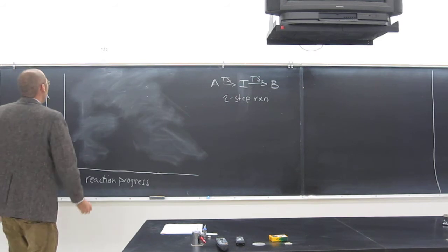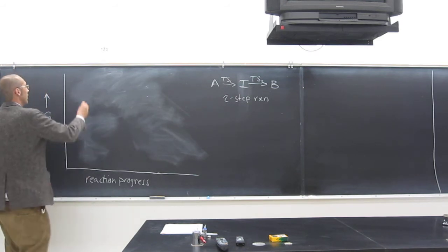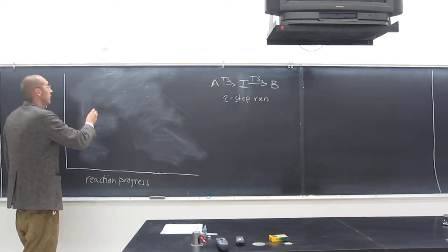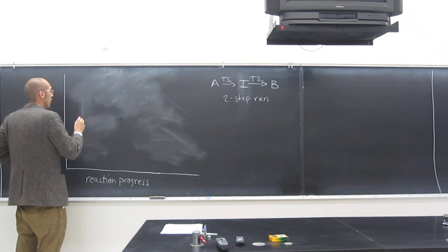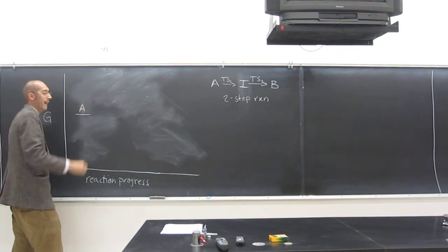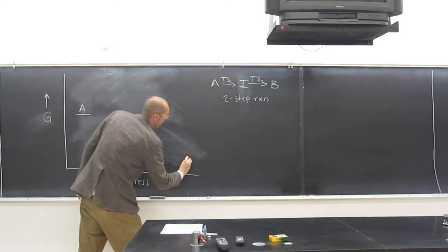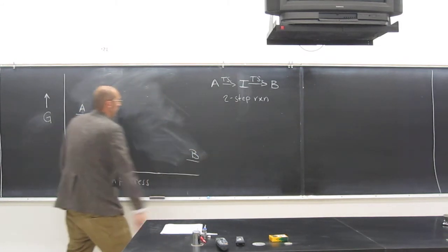Okay, see if you can draw that up. So two-step reaction, you know it's going to have two humps, right? So it's going to be an exothermic reaction. So the reactant is going to be above the product, like that.